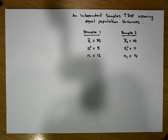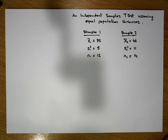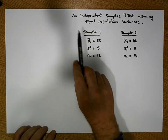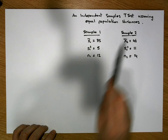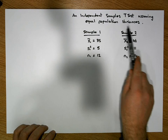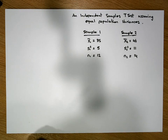Hi guys, this is Jonathan Lambert with the Mathematics Development and Support Service at the National College of Ireland. This short video is going to detail how to undertake an independent samples t-test assuming equal population variances.